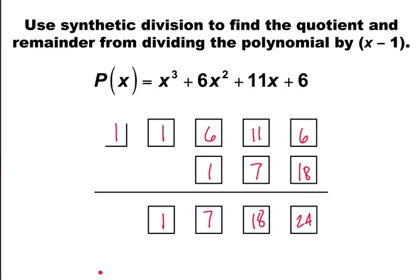So we end up with this division equation: P(x) divided by (x - 1) equals the coefficients of the new polynomial, which is 1 degree lower than the original one. So we get x² + 7x + 18 with a remainder of 24.